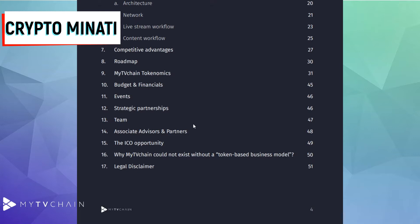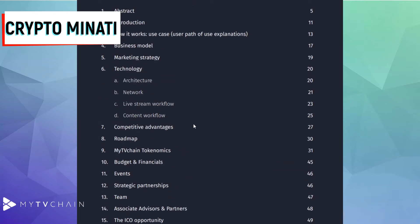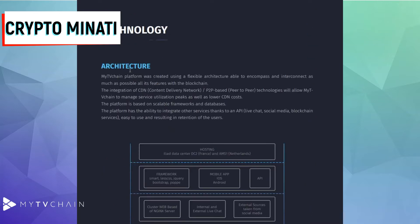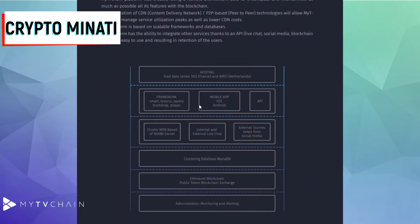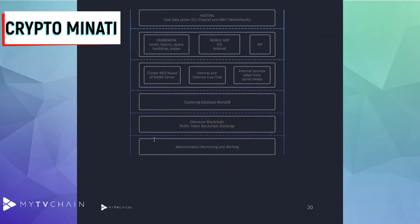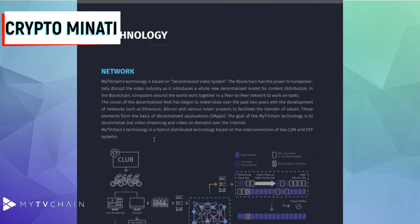The introduction covers the Nepal web business model and technology background. Let's look at the technology used in MyTV Chain. The architecture design you can see on screen includes hosting, framework, mobile apps for iOS and Android, web platform, API base, cluster web-based engine servers, internet, and external live chat. This is quite detailed — the blockchain is based on its own technology.